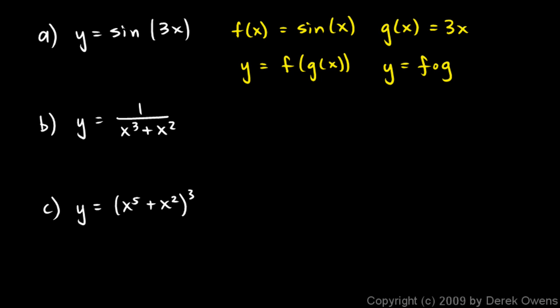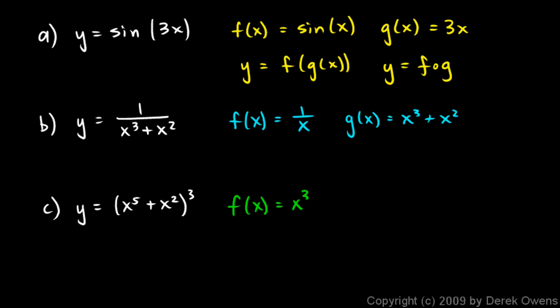In the next one, y equals 1 over (x cubed plus x squared). I would think of f of x, my outer function, as the 1-over function. My inner function g of x would be x cubed plus x squared. If that's f and that's g, then y is f of g of x. In problem c, the inner and outer functions are pretty clear: my outer function f of x is something cubed, written as x cubed, and my inner function g of x is x to the fifth plus x squared.